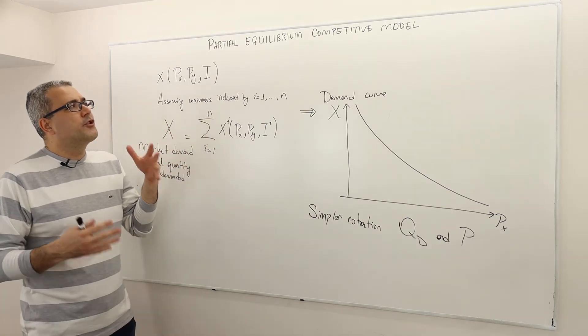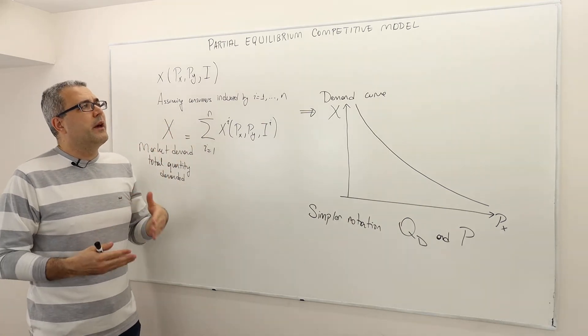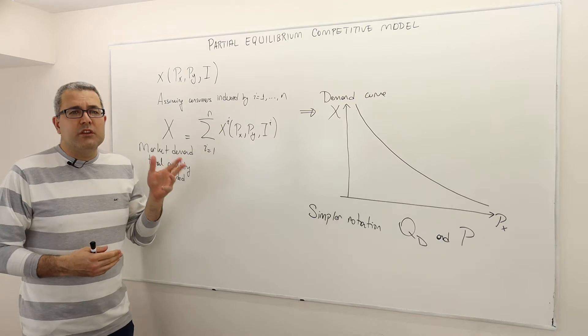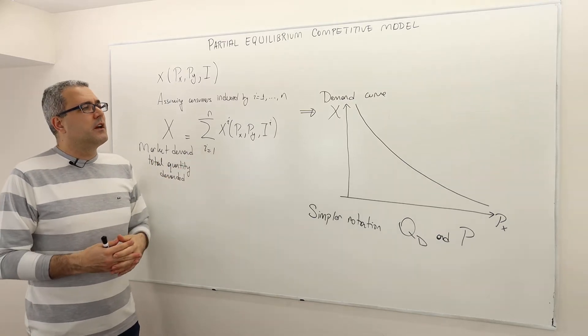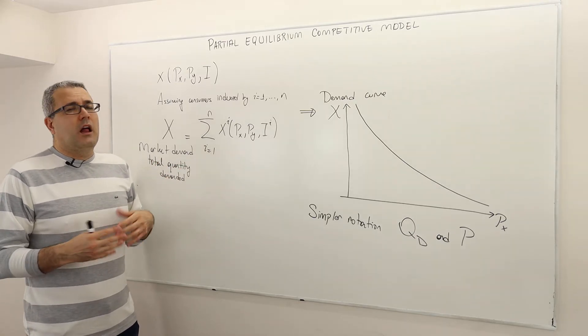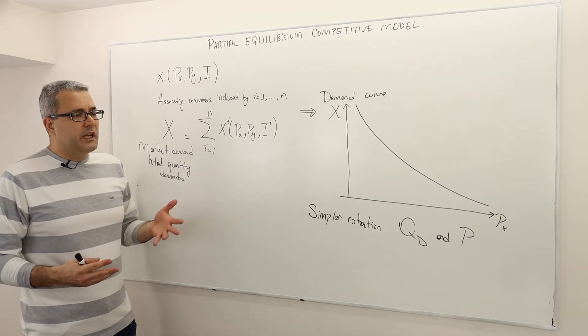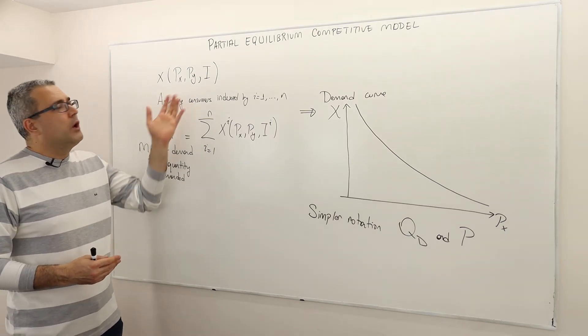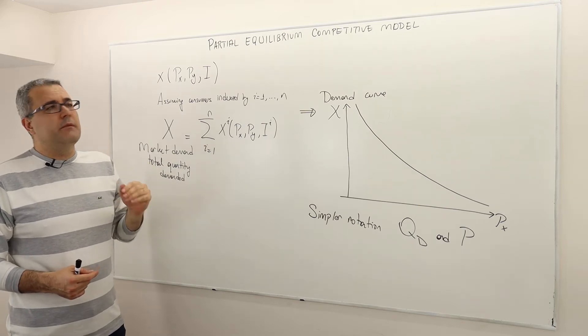In this model of partial equilibrium analysis of a competitive market, it's derived, created by Alfred Marshall in early 19th century.